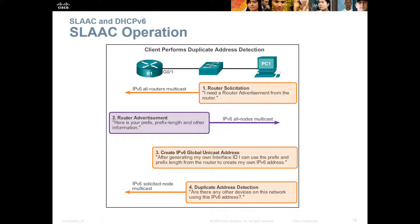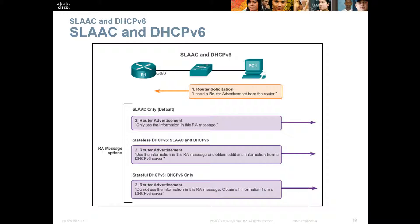Step 4 is Duplicate Address Detection — the PC verifies there are no other addresses using the same address by sending out an IPv6 solicited-node multicast. The Router Advertisement message can indicate: use the information in this RA message and obtain additional information from a DHCPv6 server if available, or do not use the RA message information and obtain all information from the DHCPv6 server.